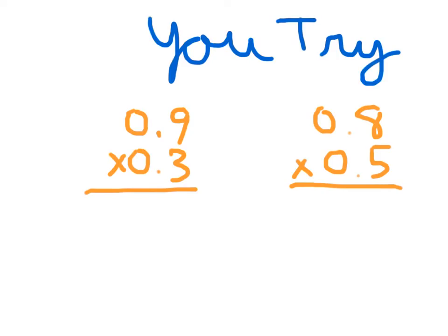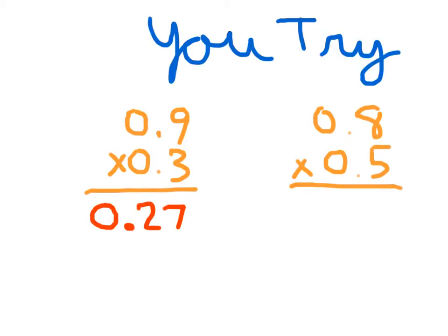Time for you to try. Please copy these down and hit pause so that you can solve them. Remember to place the decimal point appropriately. For that first problem, we should have gone 3 times 9, which is 27. Two decimal places in the problem means two decimal places in the answer, so we end up with 0.27. Please make sure to put the 0 in front of the decimal point, indicating zero ones.